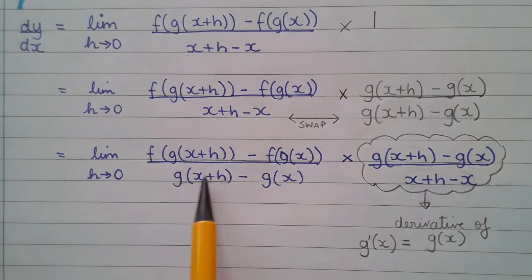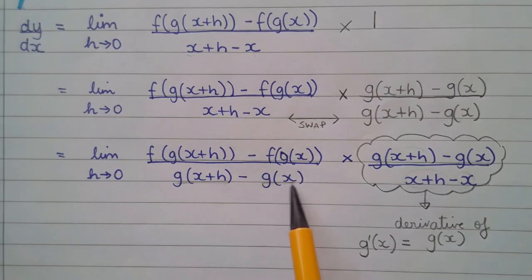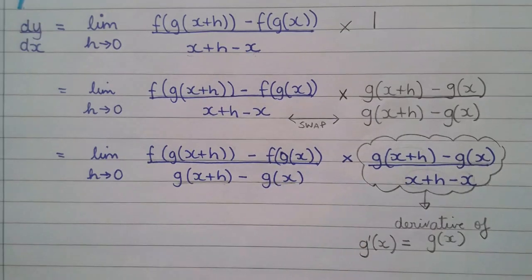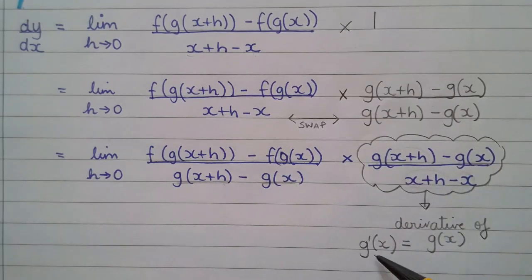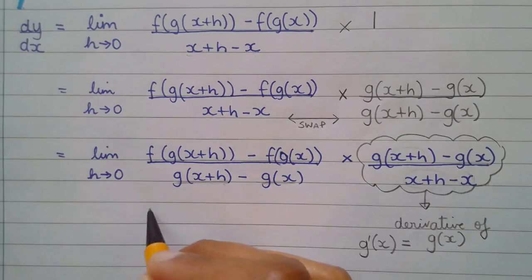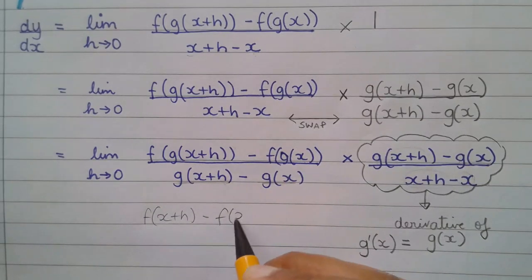And the same things happen here. This function g of x has become an input for the function f of. Which means, if we are now doing, if we have said one thing here, which makes this the derivative of g of x, and if we had a similar thing about f of x plus h minus f of x over x plus h minus x, this would have been the derivative of f of x.